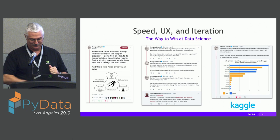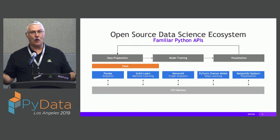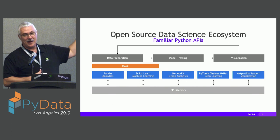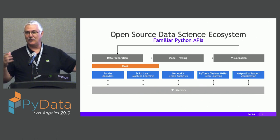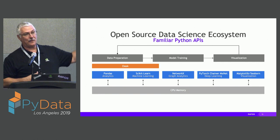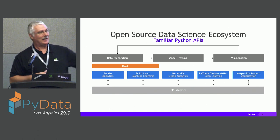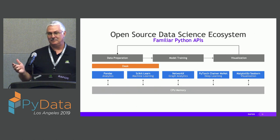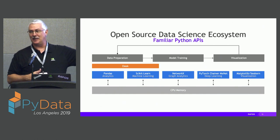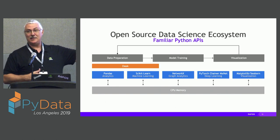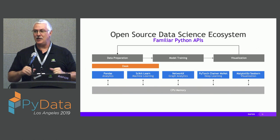Let's dive into the core RAPIDS library stack. The current open ecosystem has you doing everything in pandas for basic ETL — data loading, munging, cleansing — then passing it to scikit-learn for machine learning, NetworkX for graph analytics, PyTorch for deep learning, and various visualization tools. We love all of these APIs, so we said: let's keep the APIs but totally redo everything else underneath.